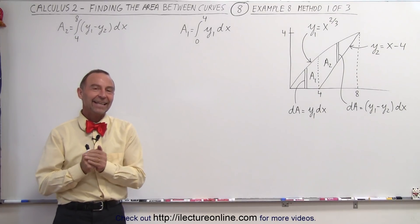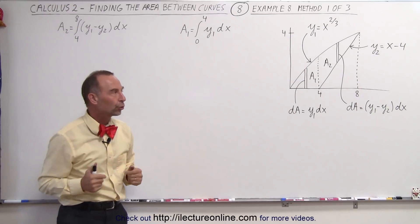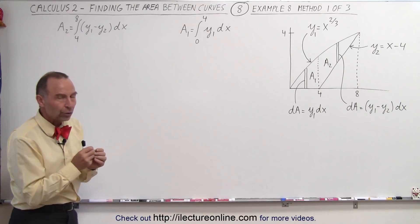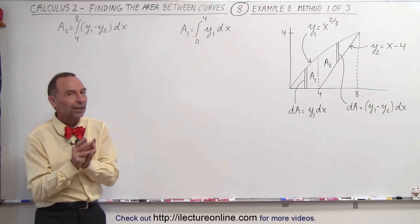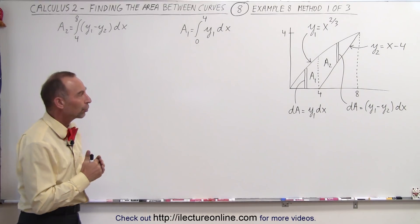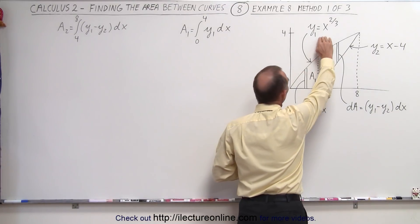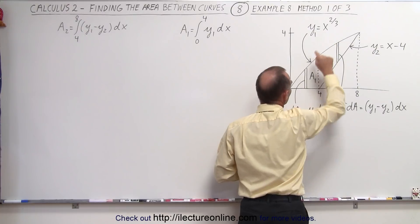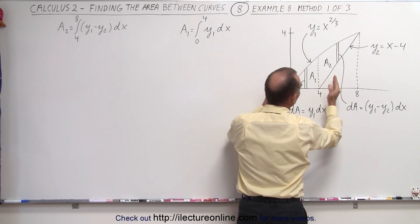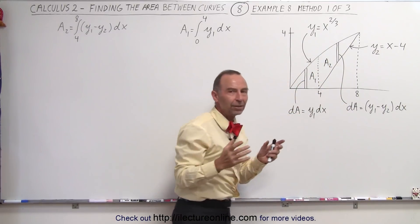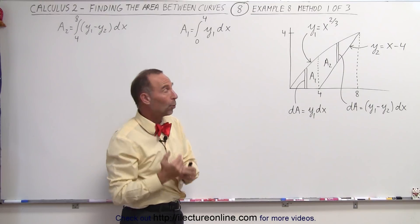Welcome to a lecture online. In this example we're going to try to find the area between two curves. We're going to show you that this can be done in various ways, and this is really where the confusion sometimes comes in when trying to find the area between two curves. Because if you're trying to find the area between the curve y1 which is equal to x to the two-thirds and y2 which is equal to x minus 4, notice where you put your area element — it will not always be the same quantity.